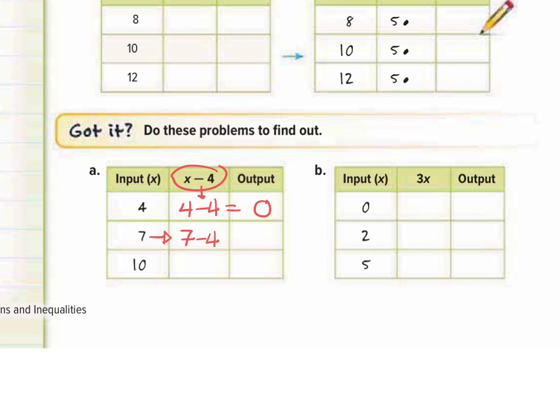4 minus 4 gives us an output of 0. The next input is 7; putting that into the equation, 7 minus 4 gives us an output of 3. Our last input is 10 — put 10 into the function rule: 10 minus 4 gives us an output of 6. So our outputs are 0, 3, and 6.